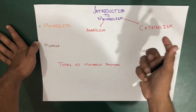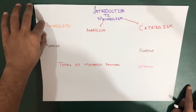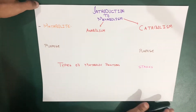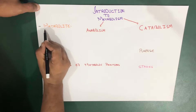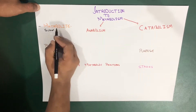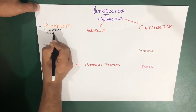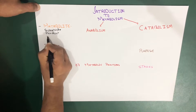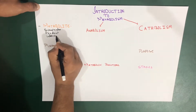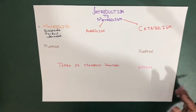We have just defined what metabolism is. Now I have to define metabolites. Metabolites are actually our substrates, our products, and our intermediates — which are used during these reactions. So the substrates, products, and intermediates involved in the reactions of metabolism — you call those things the metabolite.